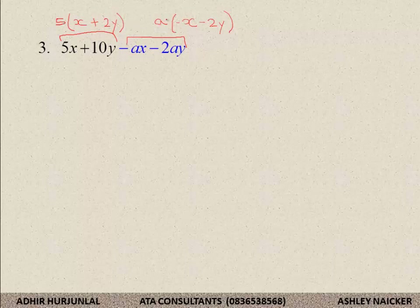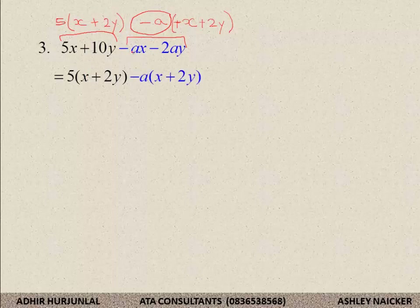In the exams when we ask you these questions, most of the time we would want you to remove a negative as common factor, not a positive. Watch what happens if I remove a negative instead of a positive. If I remove a negative, this becomes positive x and this becomes positive 2y, because negative times positive x gives minus ax, and negative times positive 2y gives minus 2ay. To remove a negative as a common factor — going back to the example — I removed negative a as common factor and I am left with x plus 2y. Now that bracket and this bracket are exactly the same. I remove x plus 2y as common factor, and my second bracket is 5 minus a.